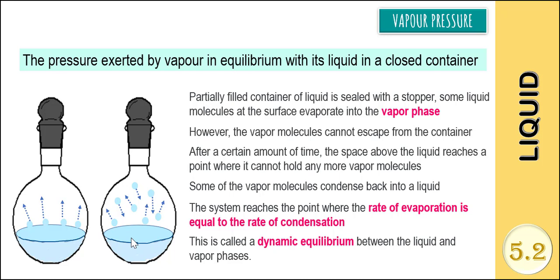The system will reach the point where the rate of evaporation is equal to the rate of condensation. This is called a dynamic equilibrium between the liquid and the vapor phase.